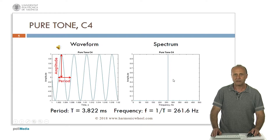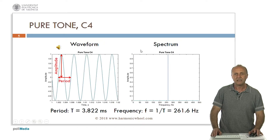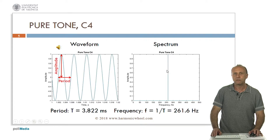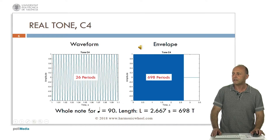This is the spectrum: the representation of the sound on a frequency axis. Now the amplitude has been normalized from 0 to 1. If the length of the tone is infinite, then the spectrum is a very thin line. But in the case of a real tone with a finite length...